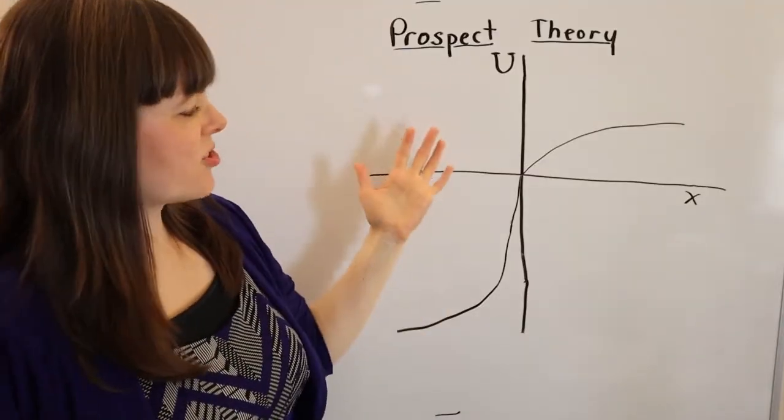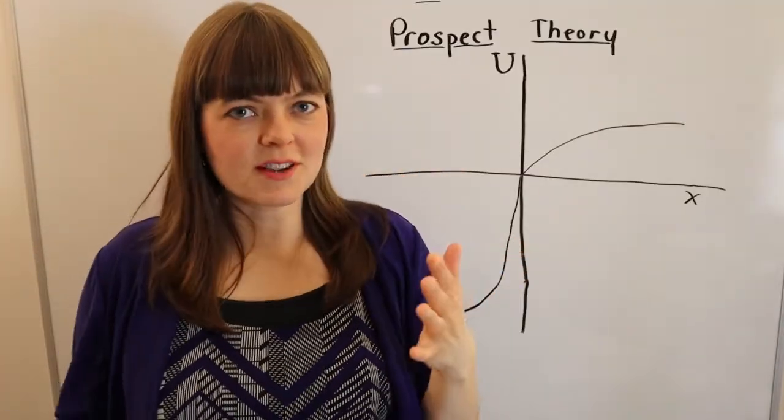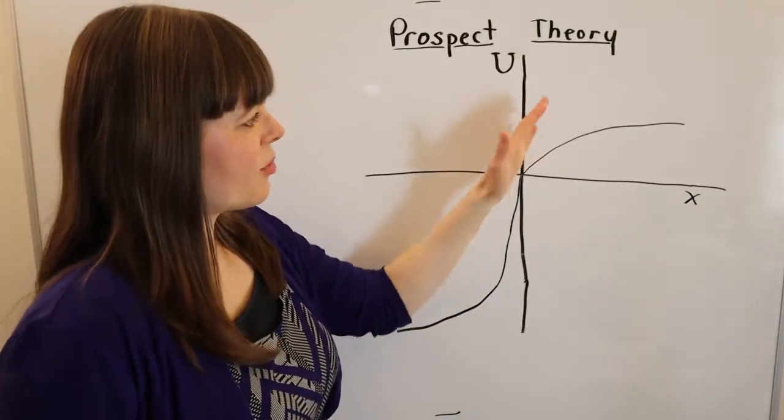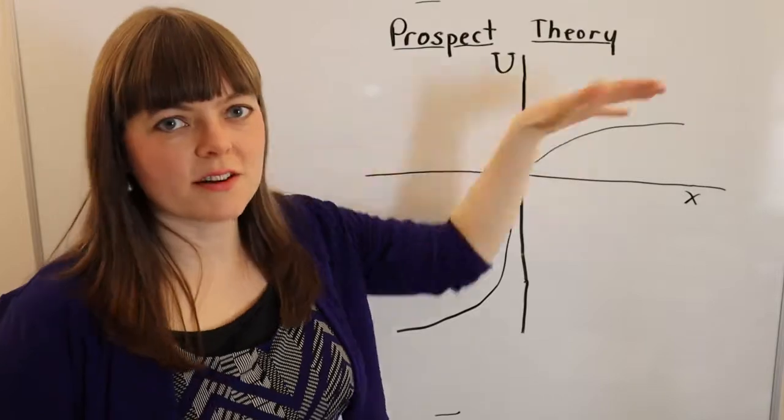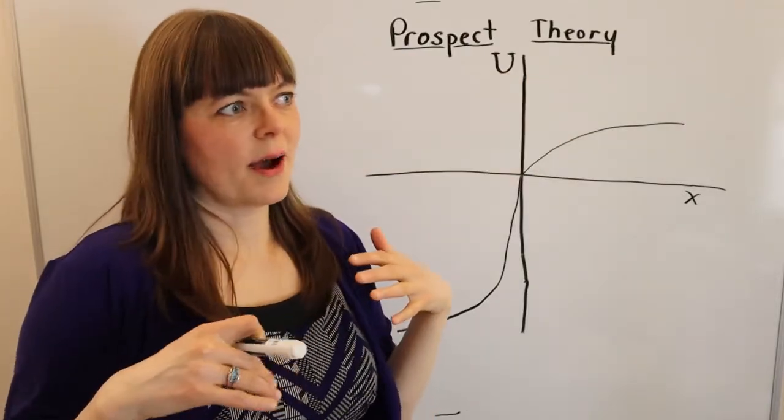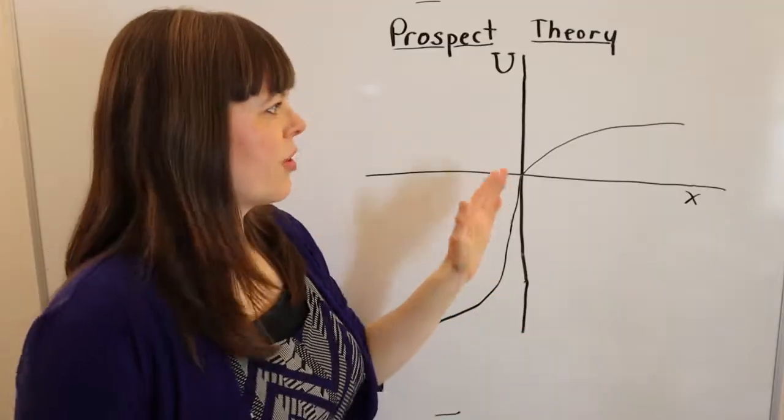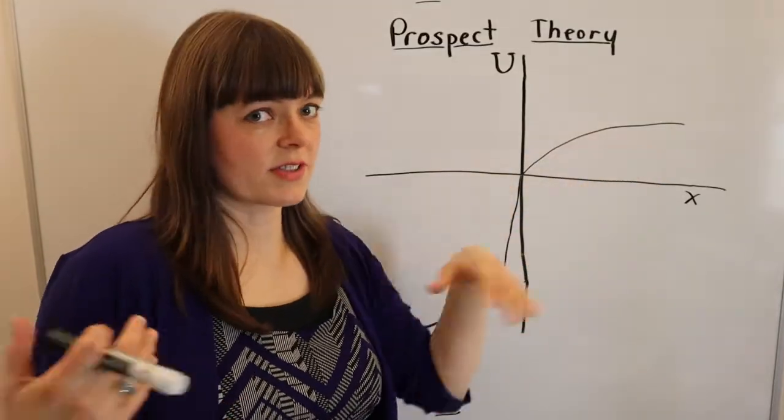And then the third feature of prospect theory has to do with risk aversion and risk-seeking behavior. In particular, we have this risk-averse positive quadrant that's been part of the economic theory for many years. We've known that people tend to behave in a risk-averse way.